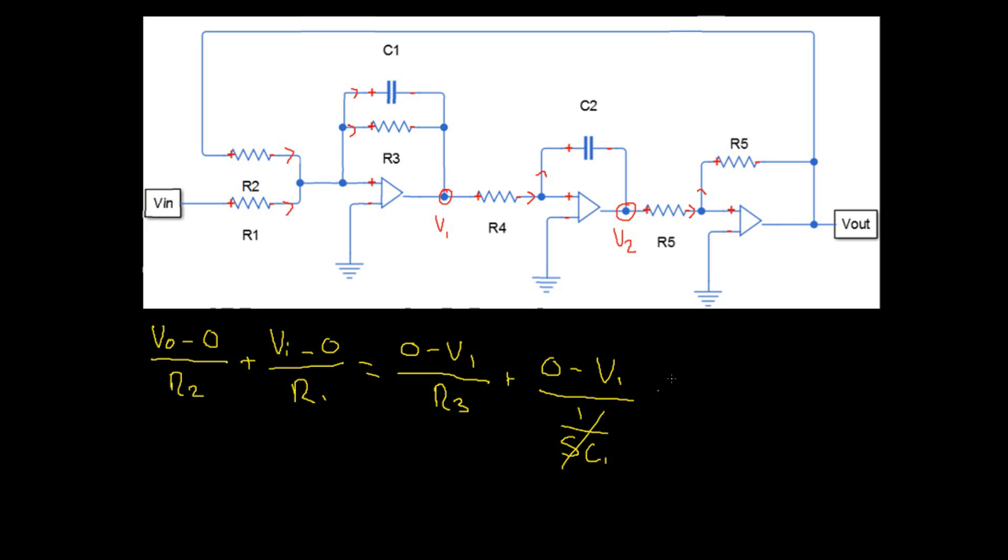Again, we're going to invert this and multiply, which gives us negative V1 SC1. Now, we can multiply through our whole equation by R1, R2, R3. And that will remove all of the denominators.